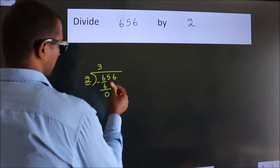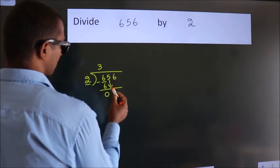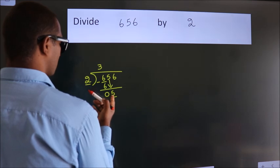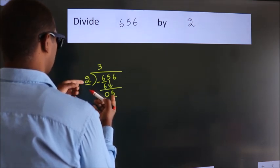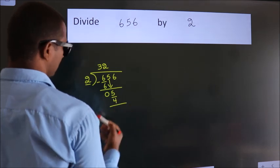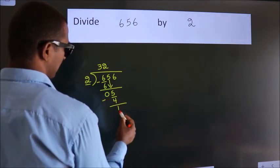After this, bring down the beside number. So 5 down, so 5. A number close to 5 in the 2 table is 2 twos, 4. Now we subtract. We get 1.